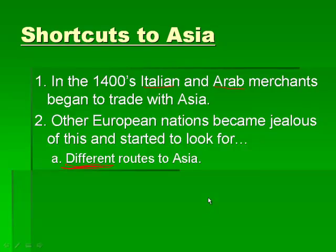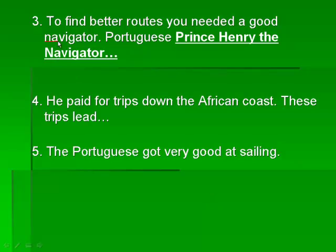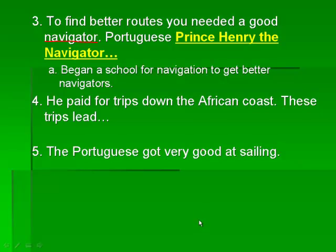To find better routes, you need a good navigator. Portuguese Prince Henry, who becomes known as Prince Henry the Navigator, sets up the first schools for navigation so he can get some better navigators. Just like if you want to be a teacher, you need to go to school and learn those certain skills — if you want to be a navigator, you need to learn how to navigate.